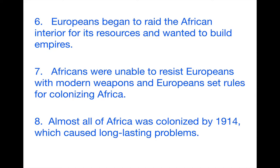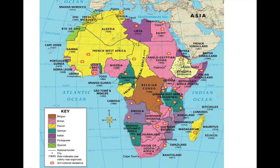Colonization is going to cause long-lasting problems. We'll look at some of those more, and we'll have our guest speaker come in to discuss it further. Here is Africa in 1914, after it's been colonized and divided up. The key represents the different European nations that colonized it — it is very colorful and diverse. It's going to set up a lot of problems. If you have any questions, please feel free to bring them to class. Talk to you later, bye.